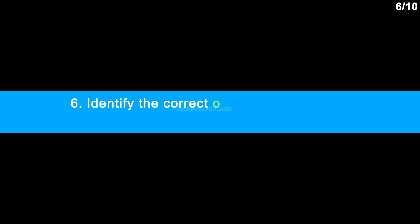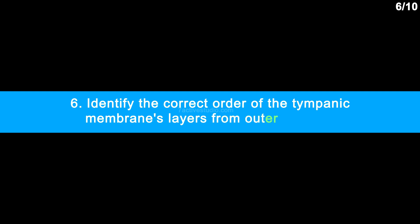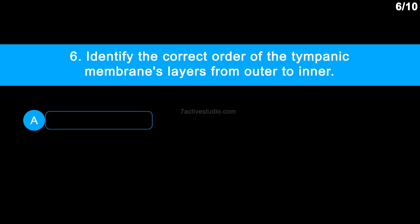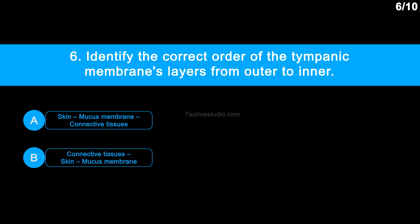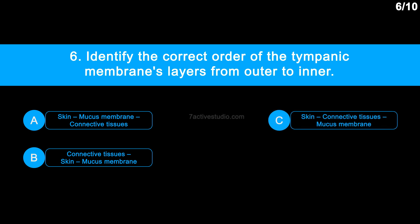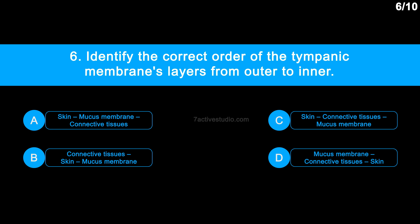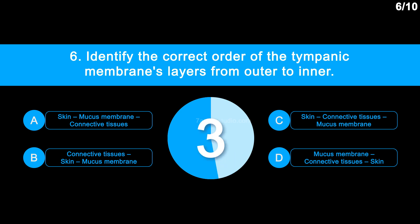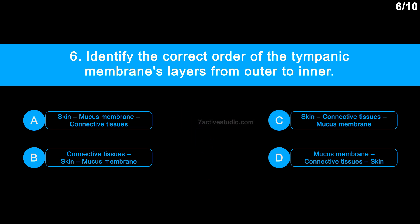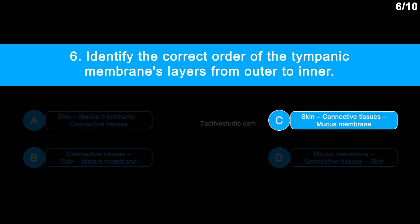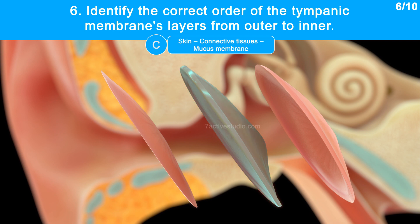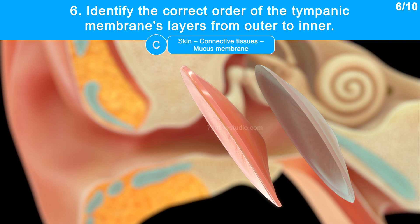Question No. 6: Identify the correct order of the tympanic membrane's layers from outer to inner. Option A: Skin, Mucous membrane, Connective tissues. Option B: Connective tissues, Skin, Mucous membrane. Option C: Skin, Connective tissues, Mucous membrane. Option D: Mucous membrane, Connective tissues, Skin. The correct answer is Option C: Skin, Connective tissues, Mucous membrane. The tympanic membrane is composed of connective tissues covered with skin outside and mucous membrane inside.